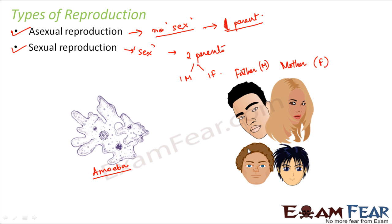That is why kids have similarities to both of their parents. Some might have more similarities to the father, some to the mother, but there are possibilities that they will have similarities from both parents.